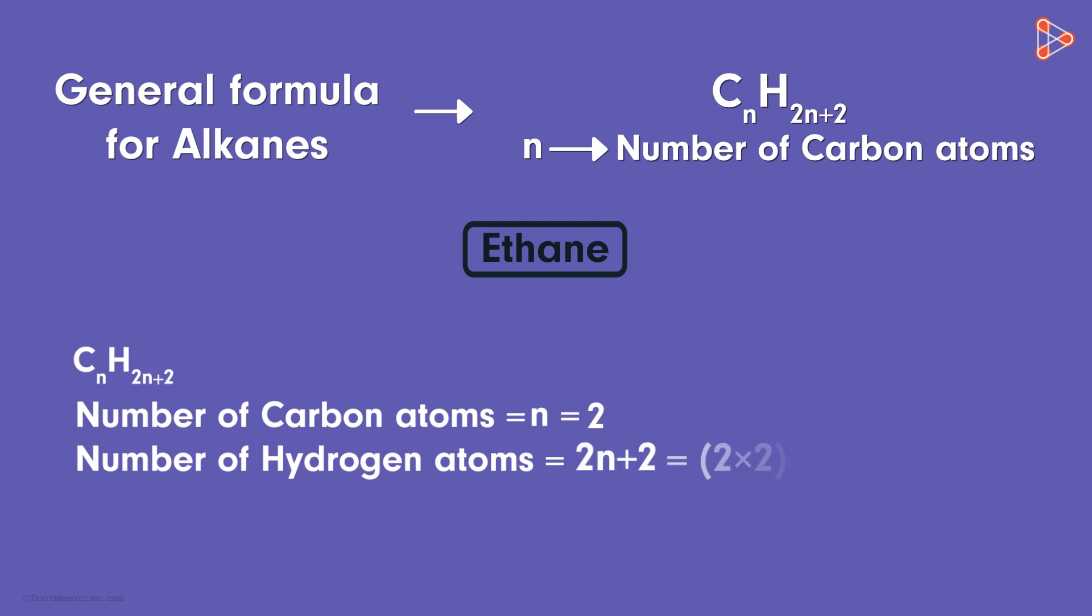The number of hydrogen atoms is 2 times n plus 2. That'll be 2 times 2 plus 2. That is 6 hydrogen atoms. Thus, the chemical formula of ethane will be C2H6. This is how all alkanes can be represented.